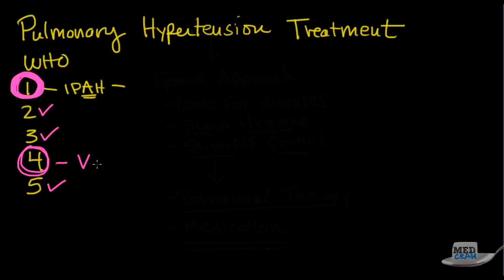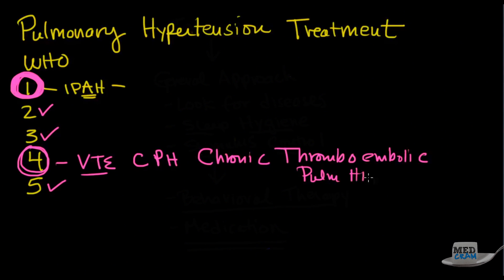Remember, 4 is for venous thromboembolism, or chronic pulmonary hypertension. Or as it's officially called, chronic thromboembolic pulmonary hypertension. And that's abbreviated CTEPH.